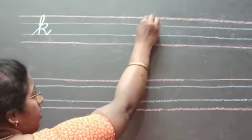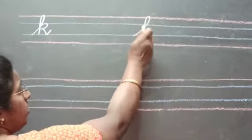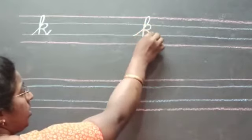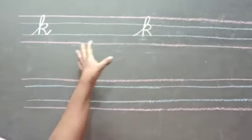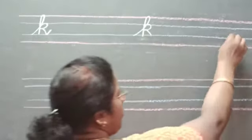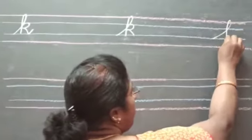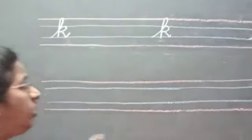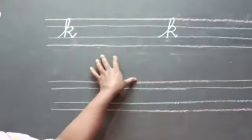See? Take your classwork book. This is K, small K. You should write like this children. One page.